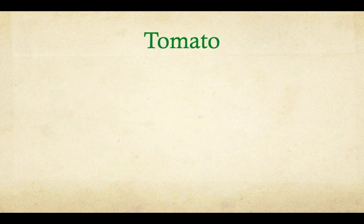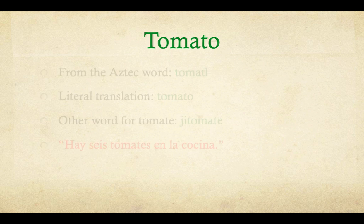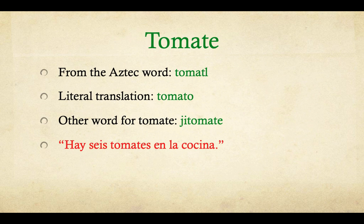Tomato. 'Tomate' comes from the Aztec word 'tomate.' Another word for tomate is 'jitomate.' Example sentence: 'Hay seis tomates en la cocina' — There are six tomatoes in the kitchen.